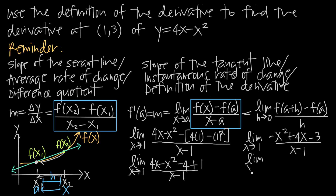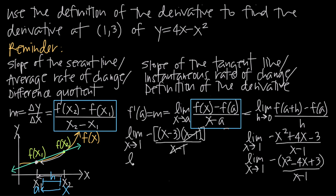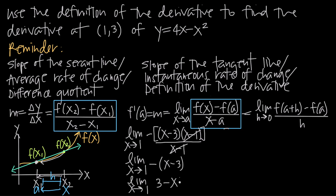Factoring out a negative from the numerator gives negative times (x squared minus 4x plus 3), divided by x minus 1. We factor x squared minus 4x plus 3 as (x minus 3)(x minus 1). The (x minus 1) terms cancel, leaving the limit as x approaches 1 of negative (x minus 3), which equals positive (3 minus x). Substituting x equals 1 gives 3 minus 1 equals 2. So the derivative at that point is 2.